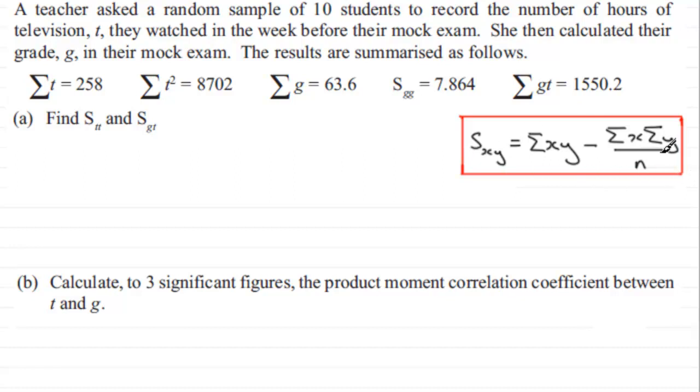Now we can use this formula then to work out stt, because when it comes to working out stt all I've got to do is compare it with this and you can see that I'm replacing the x with a t and the y also with the t. So what this equals is sigma the sum of what would have been xy is now sigma tt or sigma t squared.